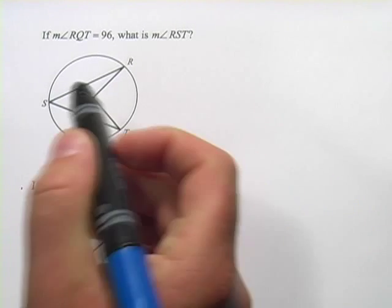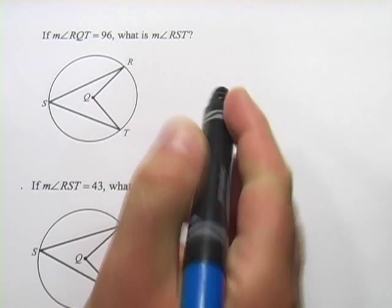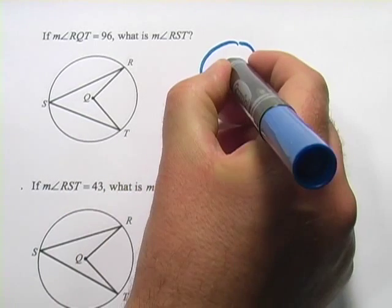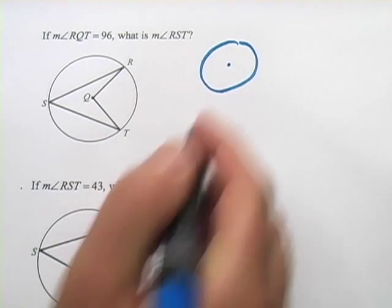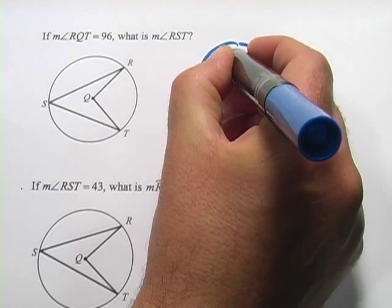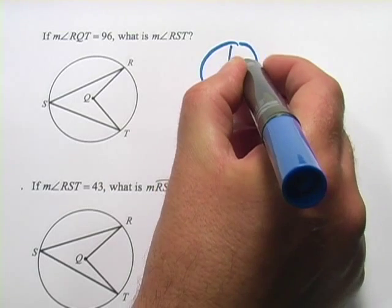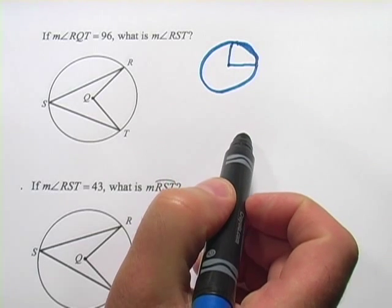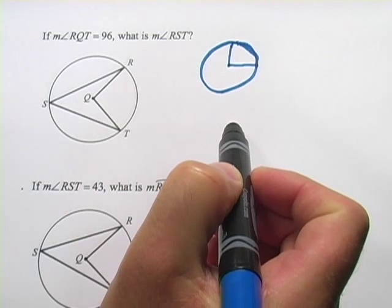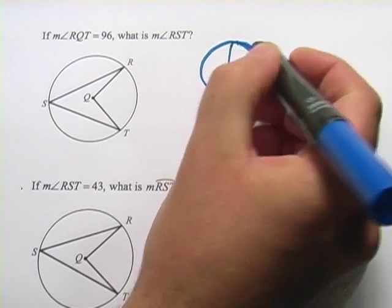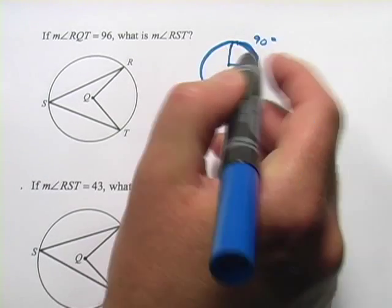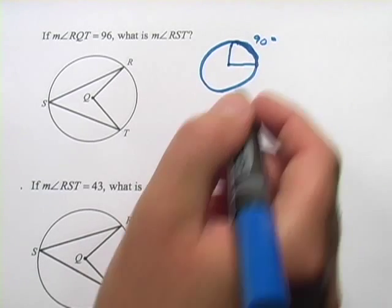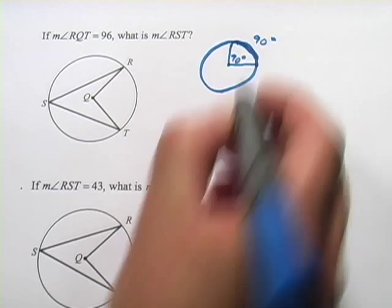In these problems, we're dealing with what are called inscribed angles. As an introduction to that, let's say we have a circle here with a center. If you were to draw in a 90 degree angle here, you would cut off an arc that is one-fourth of the circle, and since we know the degrees around the outside of the circle are 360, this actually comes out to 90 degrees in what we call arc length. So the central angle cuts off the same number of degrees of arc length.